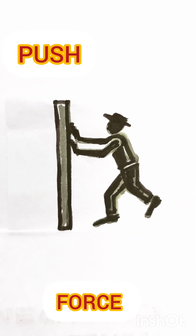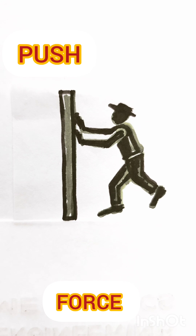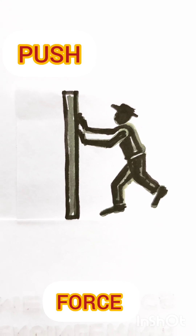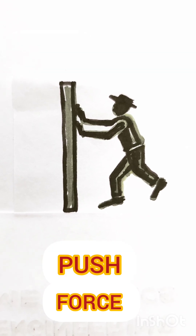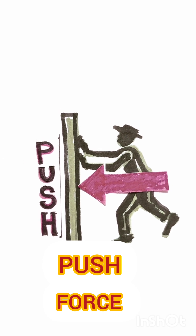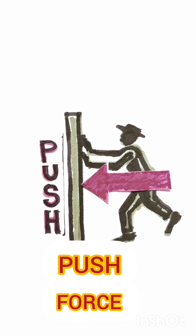On observing this problem figure also, we can understand the person who is there in the diagram who is applying force on the standing pole in the leftward direction.